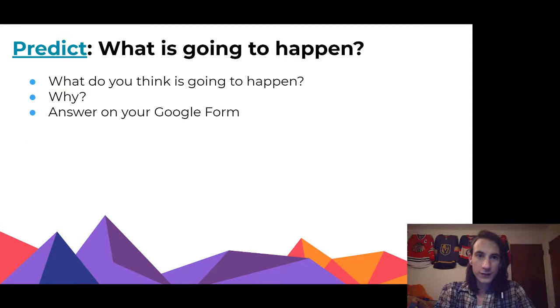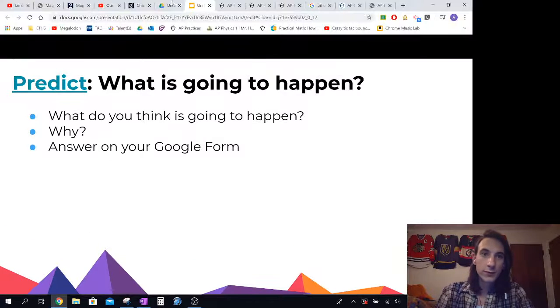So what we're doing first is I have this video. I want to show you this prediction or this video and I want you to make a prediction about what you think is going to happen and why. So there should be a Google form attached to this assignment, but I want you to look at it and I want you to fill it out before we watch it.